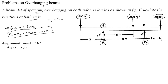Anticlockwise direction equals clockwise direction. Moment equals force into perpendicular distance. So anticlockwise moments: 800 into 3 meters, plus RB into 8 meters. Clockwise moments: 2000 Newton into 5 meters.